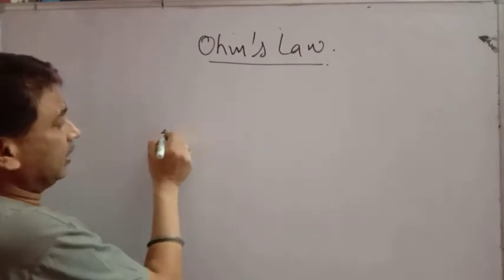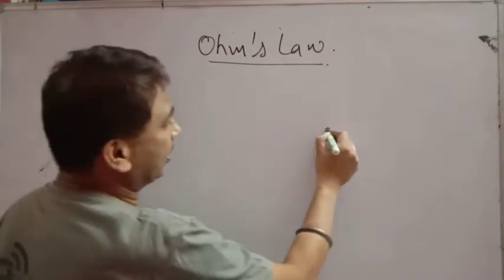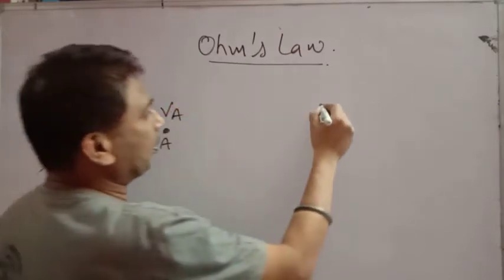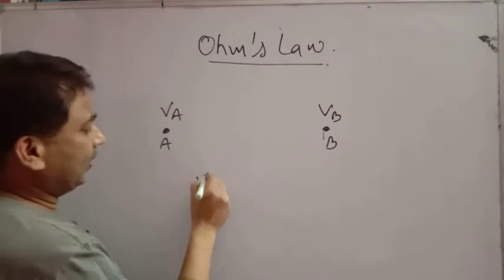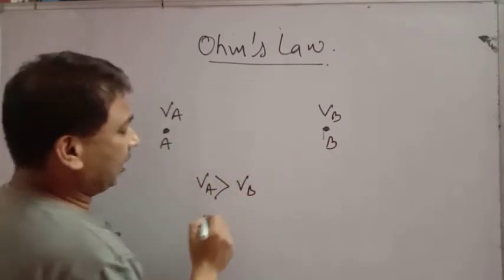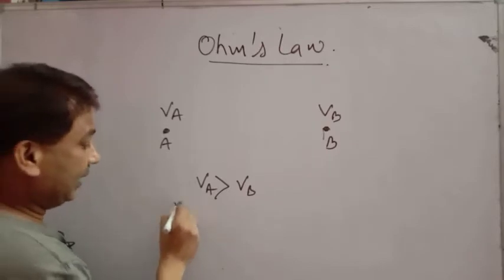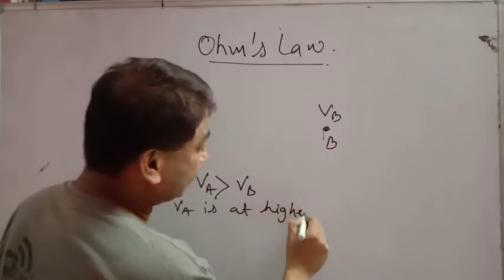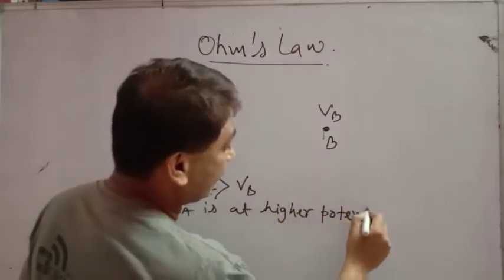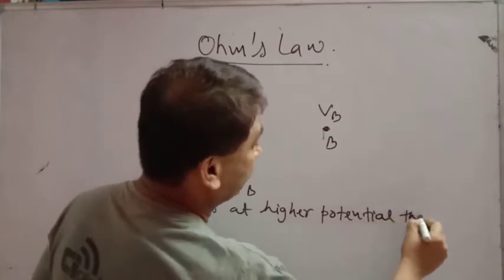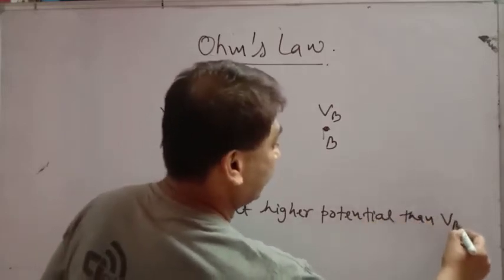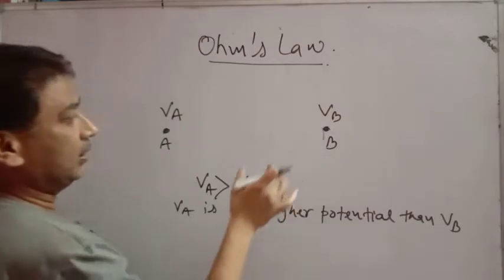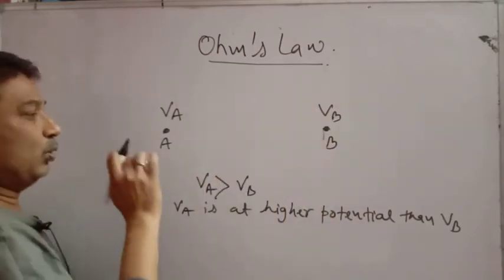So if there are two points, point A and point B, with potentials VA and VB respectively, and VA is higher than VB, then a potential difference exists between them.